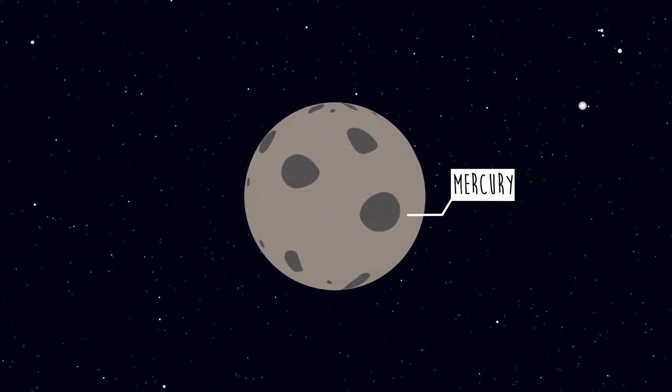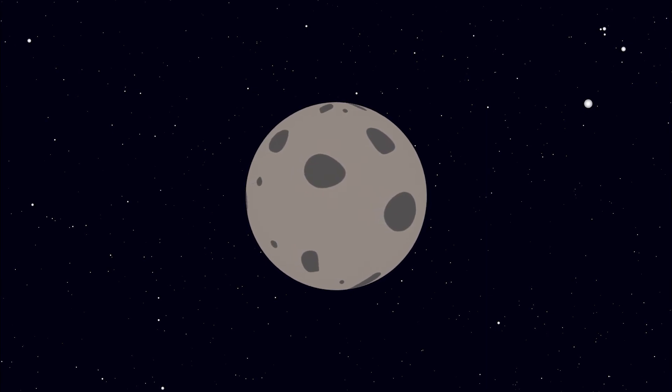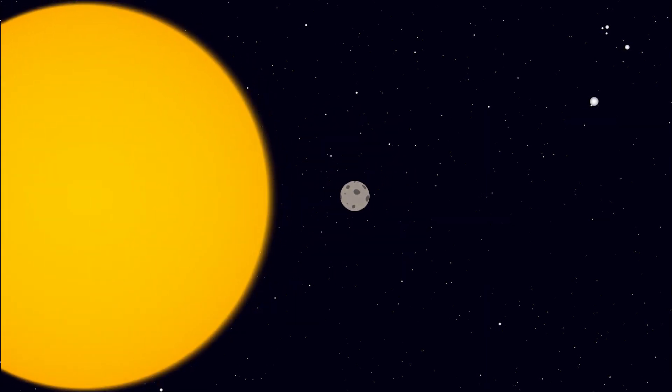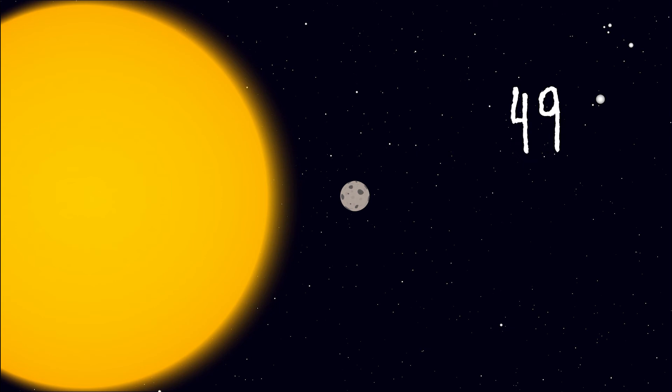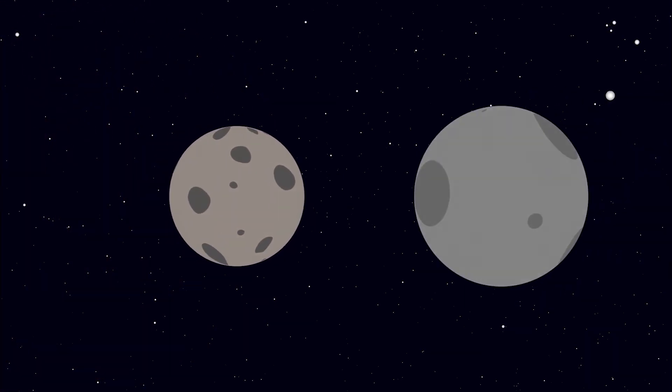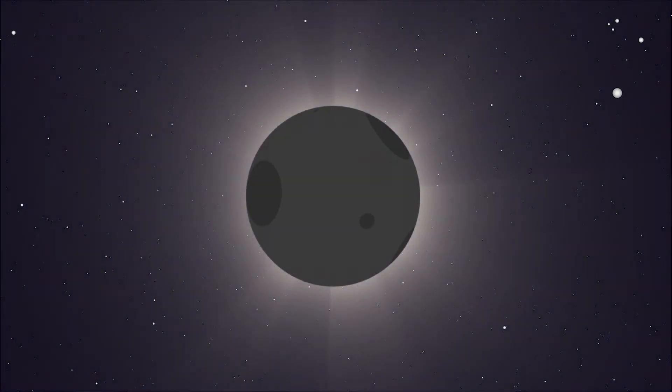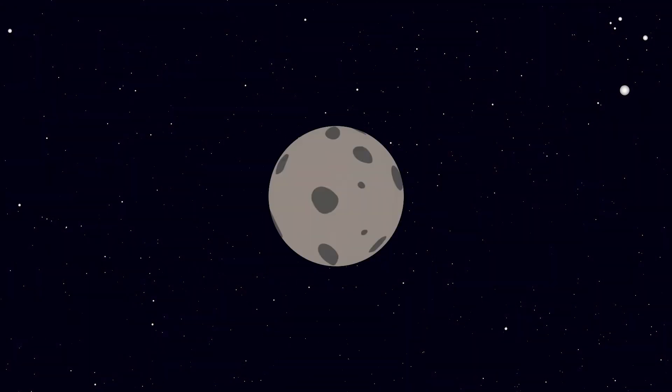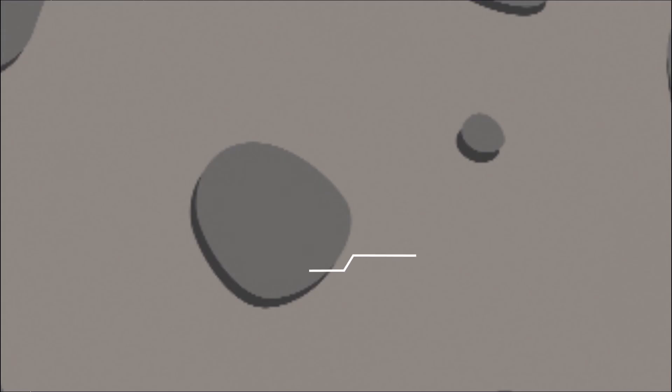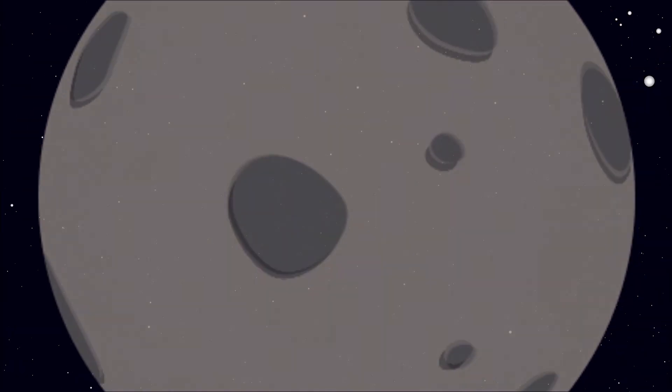Mercury is the closest planet to the Sun and has the shortest amount of days for each year: 88 Earth days. Unlike the rest of the planets, Mercury is not easily seen except during twilight. Its surface is covered in large craters which make the planet unique.